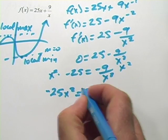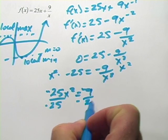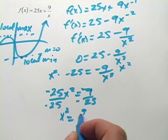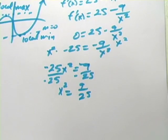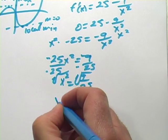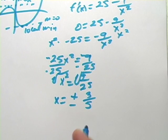So we have negative 25x squared equals negative 9. Now, I'm going to divide by negative 25. And we get x squared equals 9 25ths. And then we can take the square root of both sides. And we get x equals a positive or negative 3 fifths.